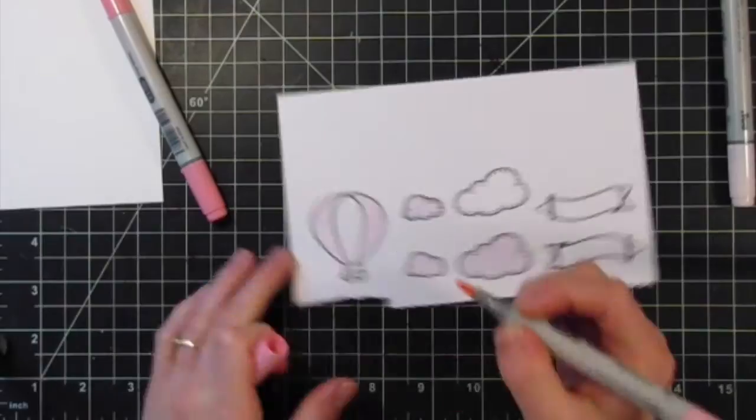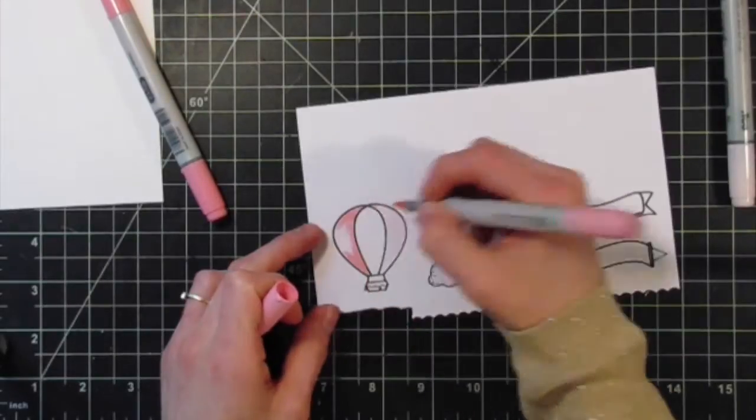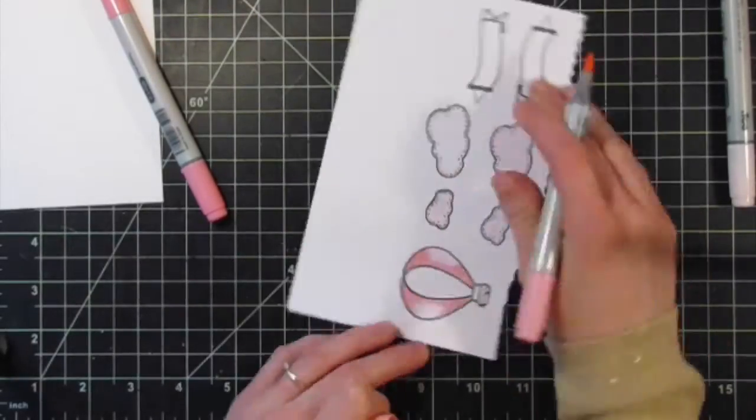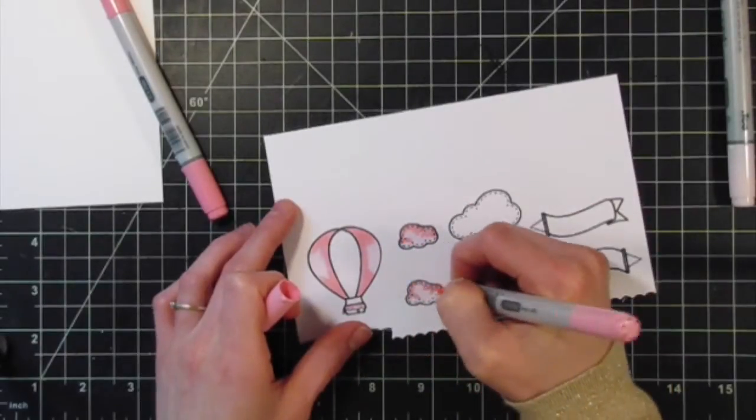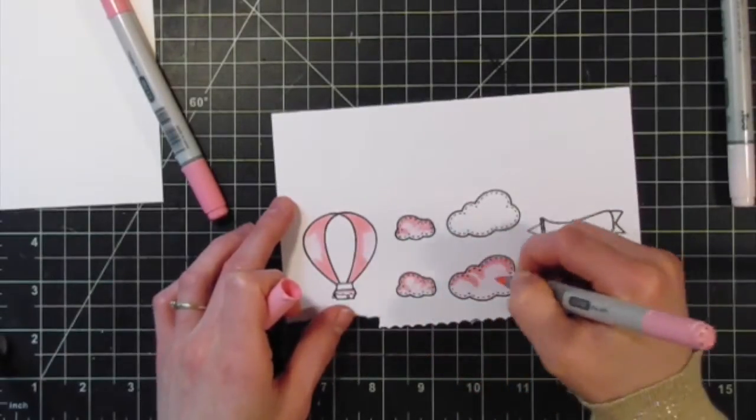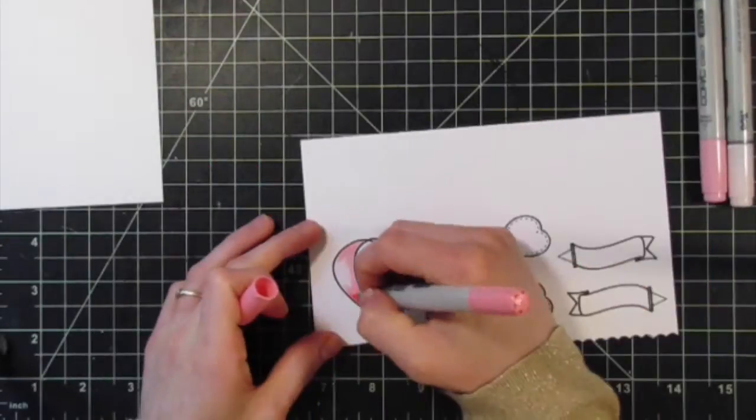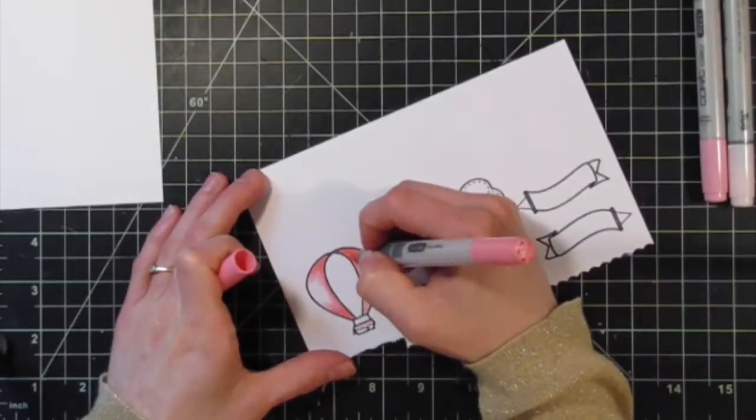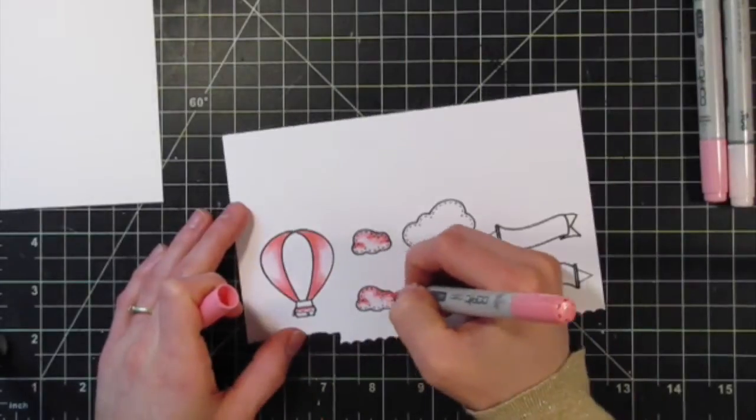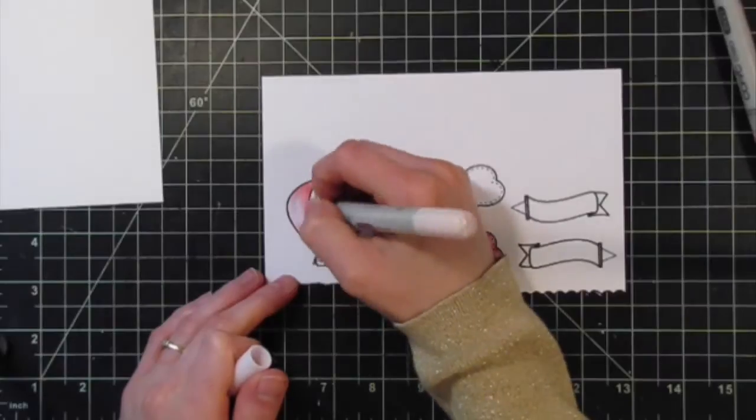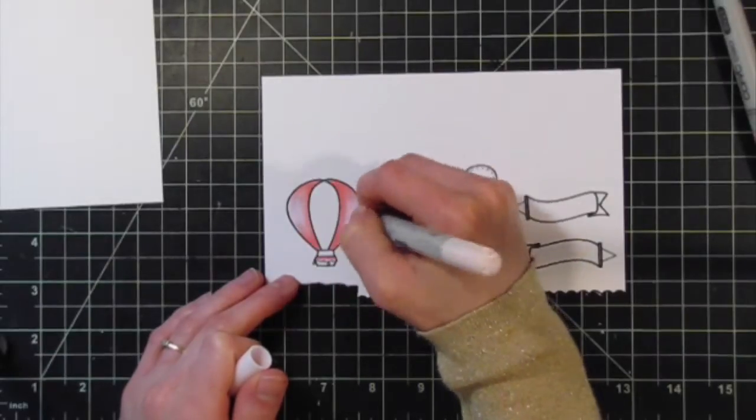Now I'm coming in with RV21 and adding some mid-tones to my hot air balloon as well as to the clouds. Now I'm coming in with RV13, adding the darkest shading. I'm adding just a little bit of that RV13 to the clouds as well, blending that all back out with my lightest color.